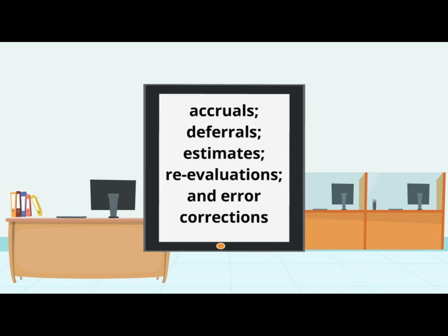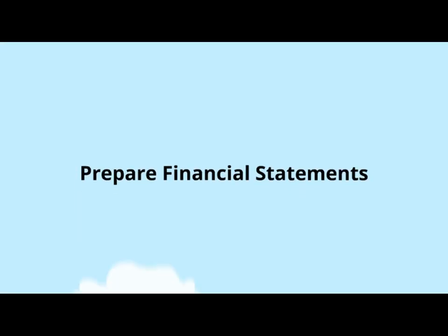Once adjusting entries have been recorded, an adjusted trial balance is prepared from the new balances in the General Ledger. The adjusted trial balance serves as the input for the next step: preparation of the financial statements.